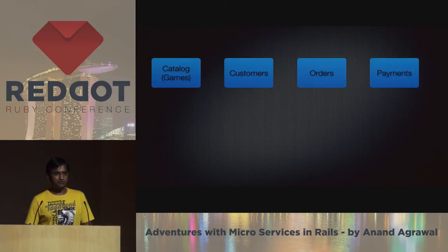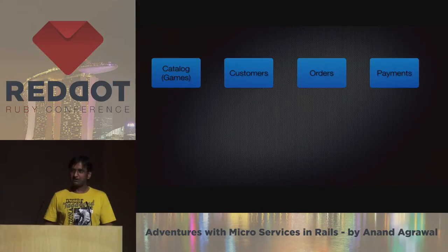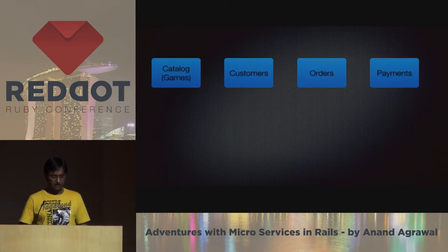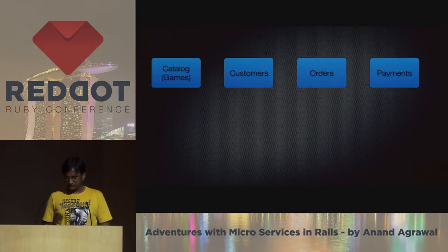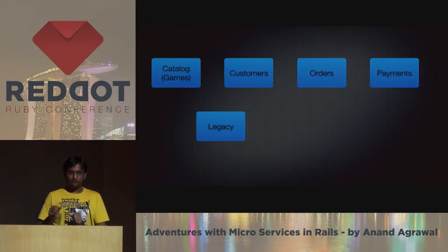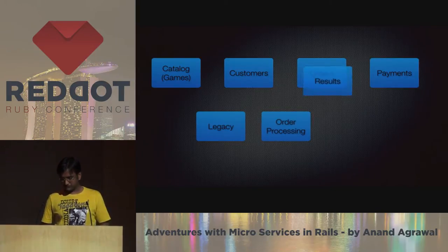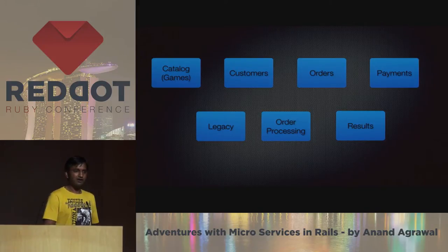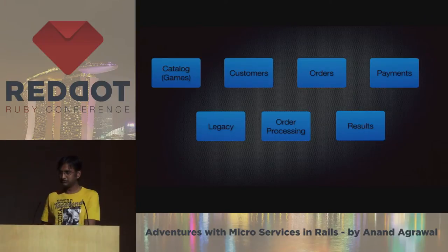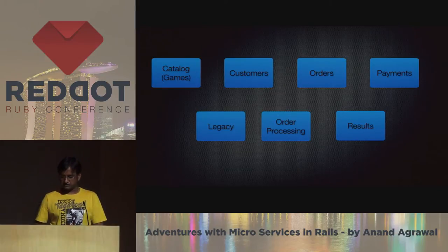As I was telling you about the domain — social gaming. Typically over the web it has three or four components. So that's where we started the plain old services: catalog, which is game catalog, customers, orders, and payments. We slowly realized that the customer service was trying to talk to legacy too much, so we extracted that out as a different microservice to talk to the legacy database and eventually throw that away. The order service started growing too much, so we extracted orders into two: order processing — the main order service now just takes orders — and there's a separate service for processing orders, and another for results, since after playing a game you get results.